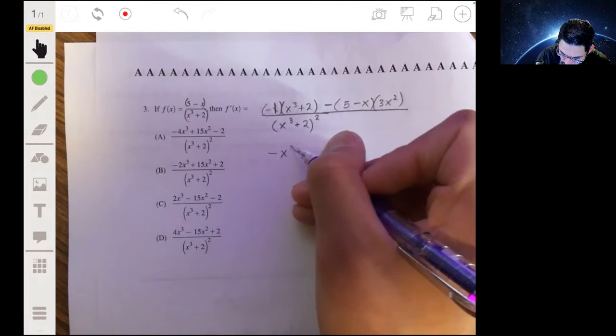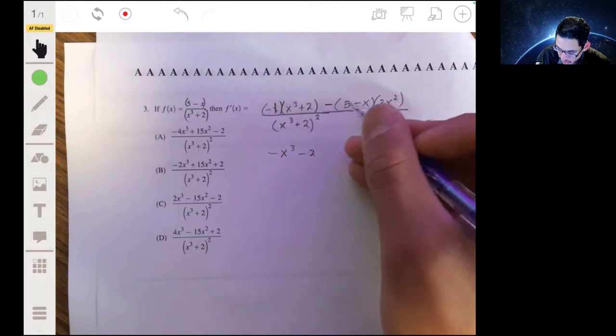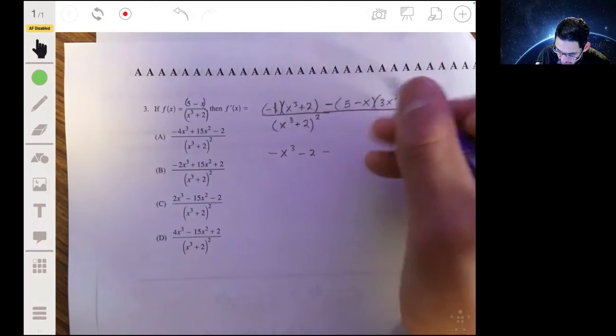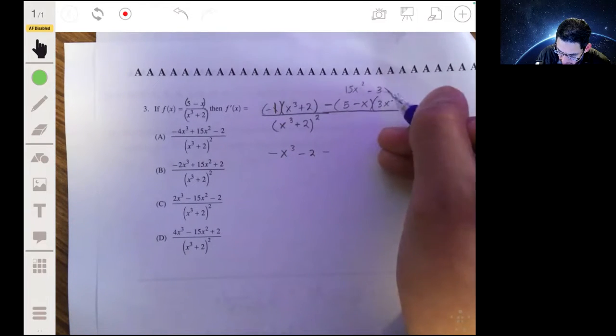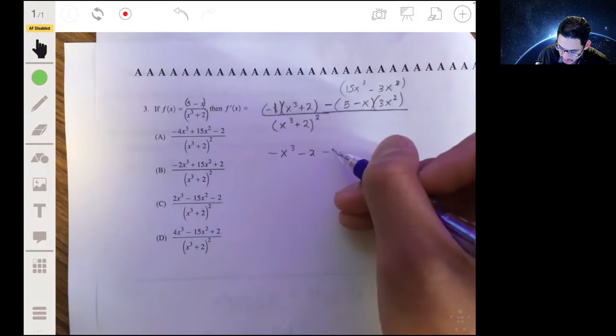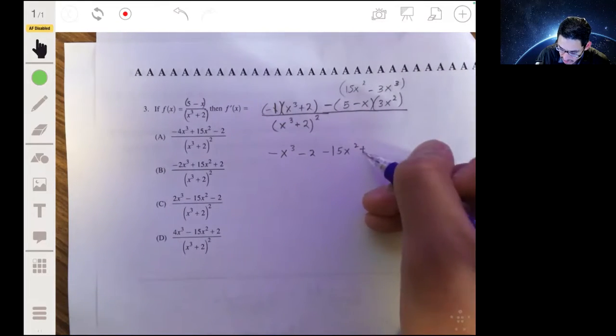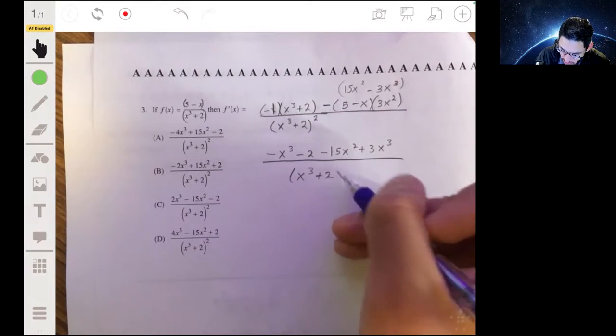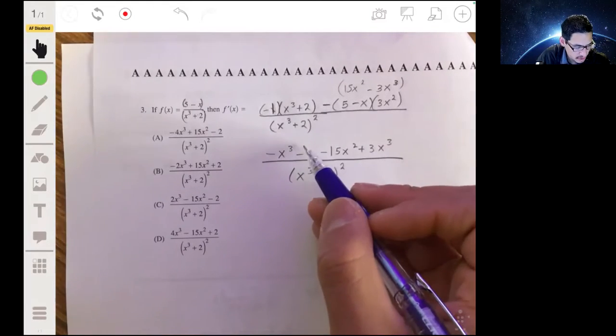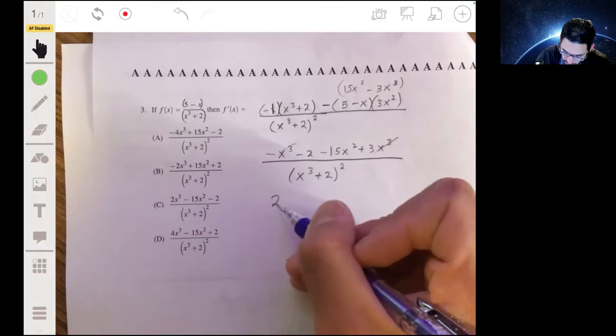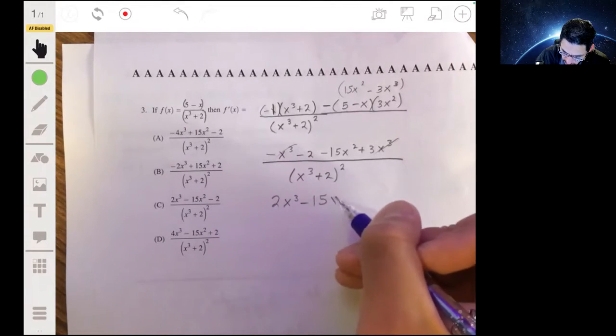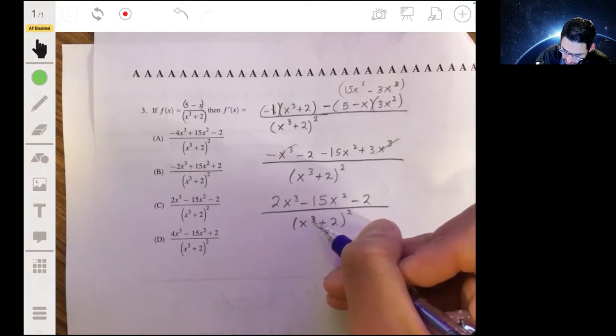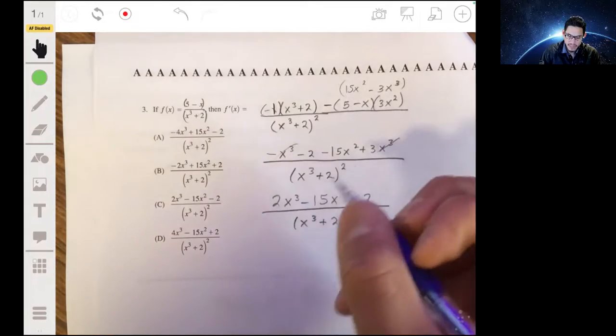And from here, we can just simplify. So the numerator becomes negative x cubed minus two. This becomes 15x squared minus 3x cubed in parentheses, so minus that, so minus 15x squared plus 3x cubed. We just combine the x cubed, so we get 2x cubed minus 15x squared minus 2 all over x cubed plus 2 squared. And so your answer will be c.